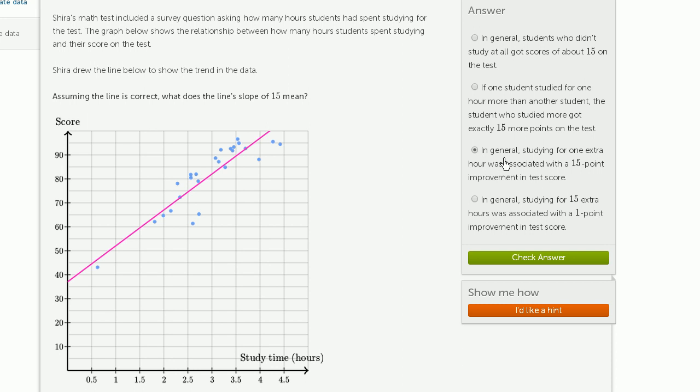In general, studying for one extra hour was associated with a 15-point improvement in test score. That feels about right. In general, studying for 15 extra hours was associated with a one-point improvement in test score. No, that would get the slope the other way around, so that's definitely not the case. Let's check our answer and we got it right.